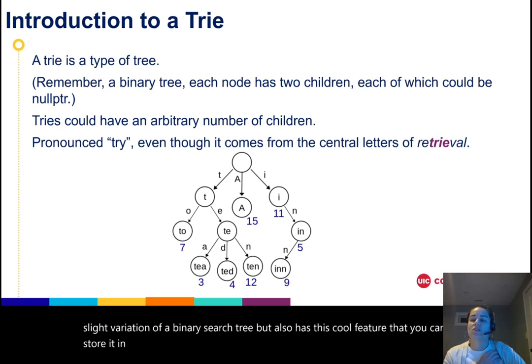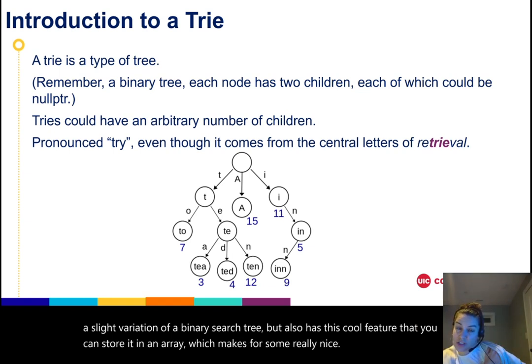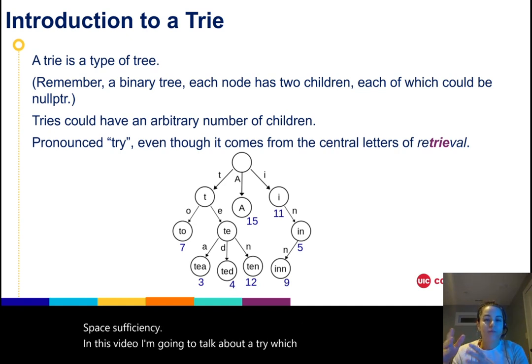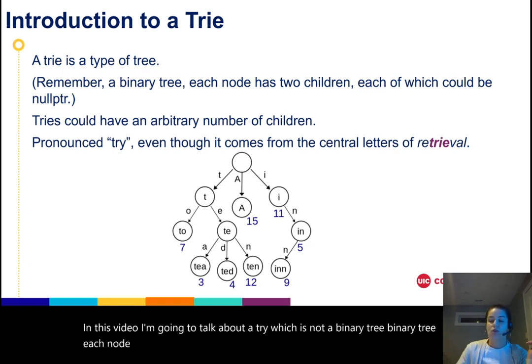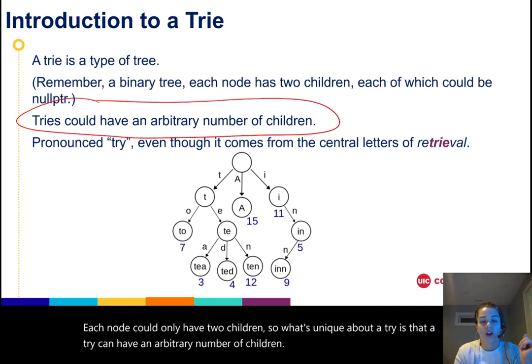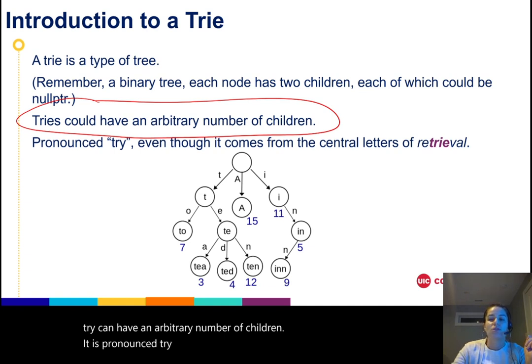In this video, I'm going to talk about a trie, which is not a binary tree. A binary tree - each node can only have two children. What's unique about a trie is that a trie can have an arbitrary number of children. It is pronounced 'try' even though it comes from the word retrieval originally.